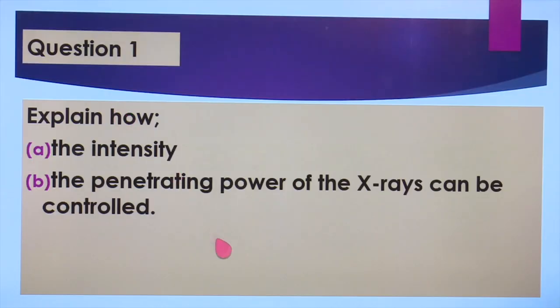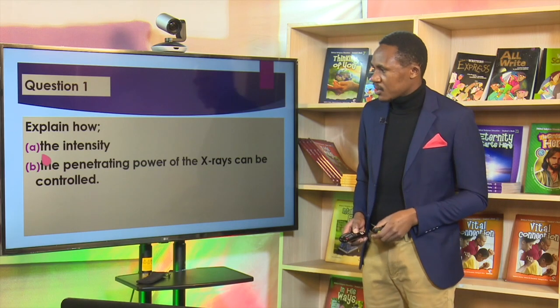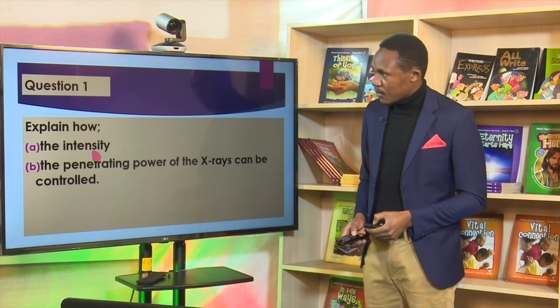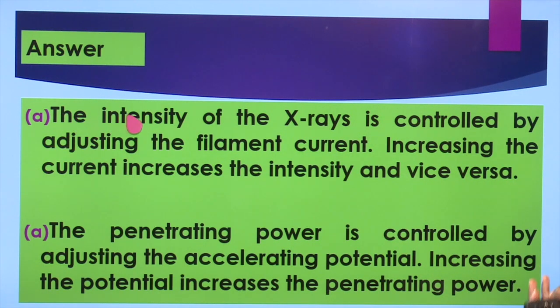When we talk about penetrating power, we are talking about adjusting the frequency or wavelength of the X-rays. At times the same question can ask how the energy of X-rays can be controlled — the energy, penetrating power, frequency, and wavelength in this context mean the same thing because we adjust them by adjusting one thing. When we talk about the intensity of X-rays, intensity has to do with numbers. How do we control the intensity? The intensity of X-rays is controlled by adjusting the filament current.